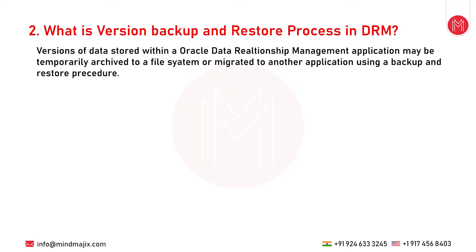The next question is: what is the version backup and restore process in DRM? Versions of data stored within Oracle Data Relationship Management may be temporarily archived to a file system or migrated to another application using a backup and restore procedure. One or more versions may be selected and included in a backup file, which is written to an external connection defined by an administrator. During the restore process, DRM identifies whether any incompatibilities exist between the properties stored in the file and the property definitions in the target application. Restore-from-file warning transactions are logged for property incompatibilities encountered during the restore process.